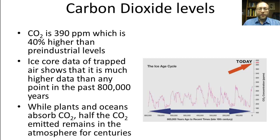Looking at another slide, we have carbon dioxide levels going all the way back 800,000 years — obtained from glaciers, which contain air bubbles preserving samples of ancient air. Today, the level of carbon dioxide is 390 parts per million. Historically, going back 800,000 years, while levels have changed quite a bit, they have never approached today's levels. It's currently 40% higher than pre-industrial levels. While plants and oceans absorb CO2, we've found that half of the carbon dioxide emitted remains in the atmosphere for centuries — CO2 is long-lived in the atmosphere, unlike methane or water vapor.